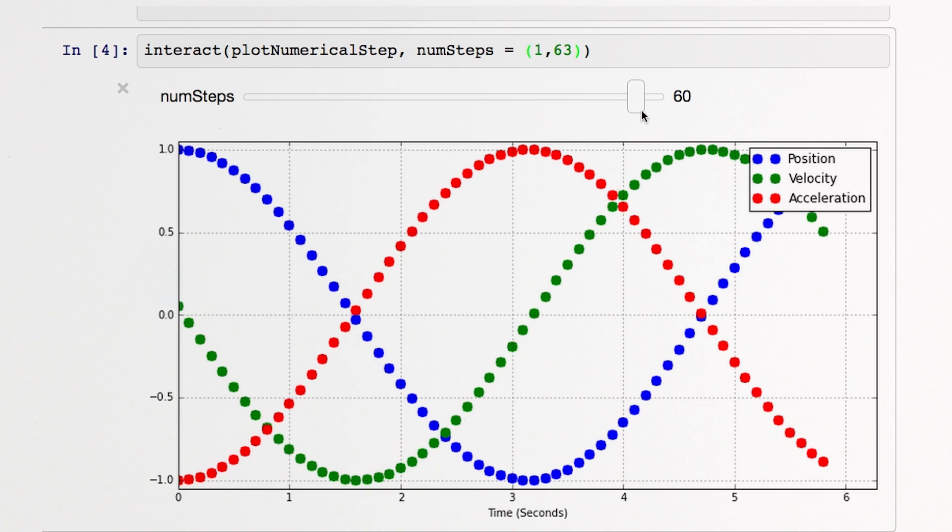So things are looking good. Our predicted motion matches our actual motion. But where do these wave shapes come from?